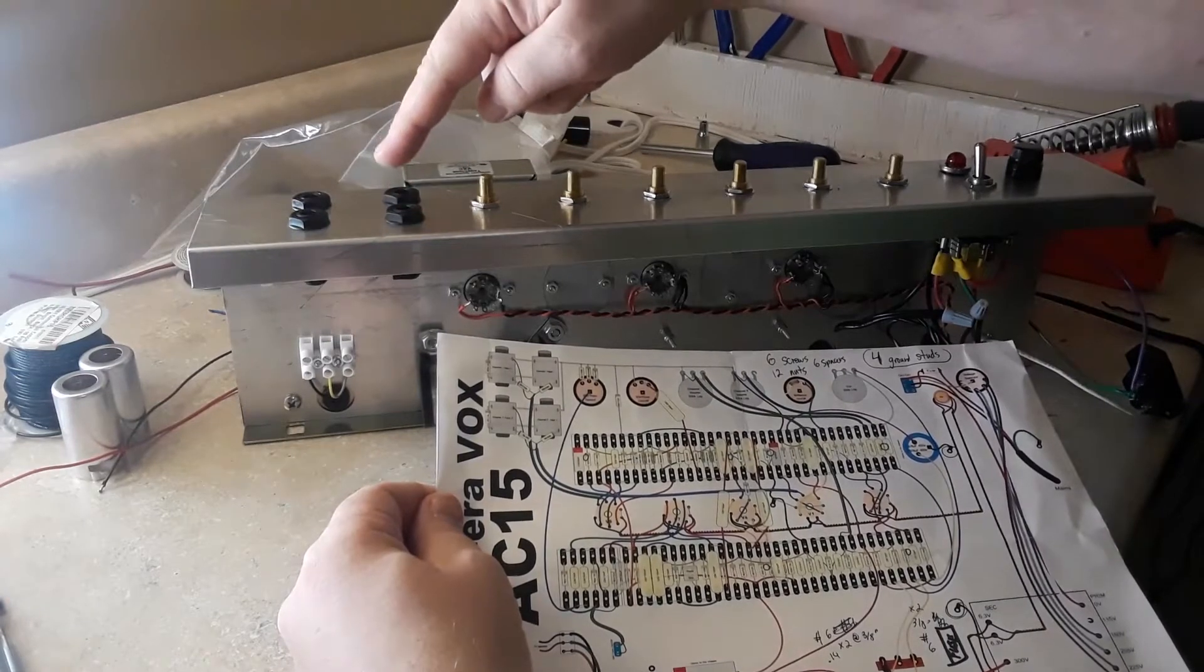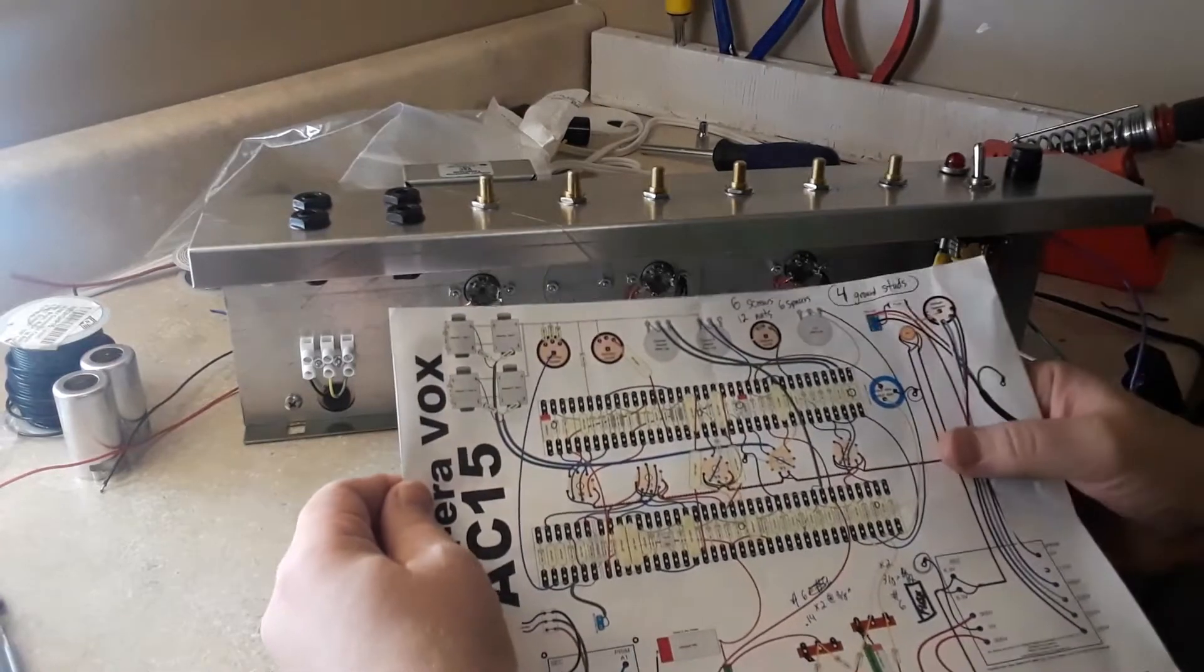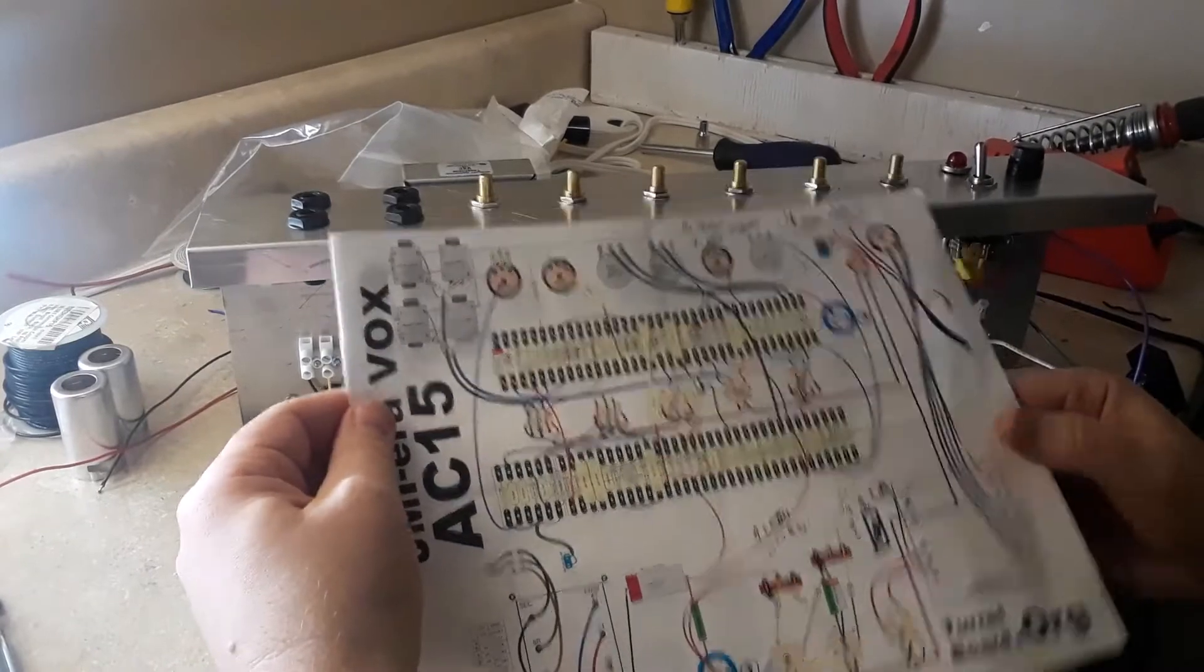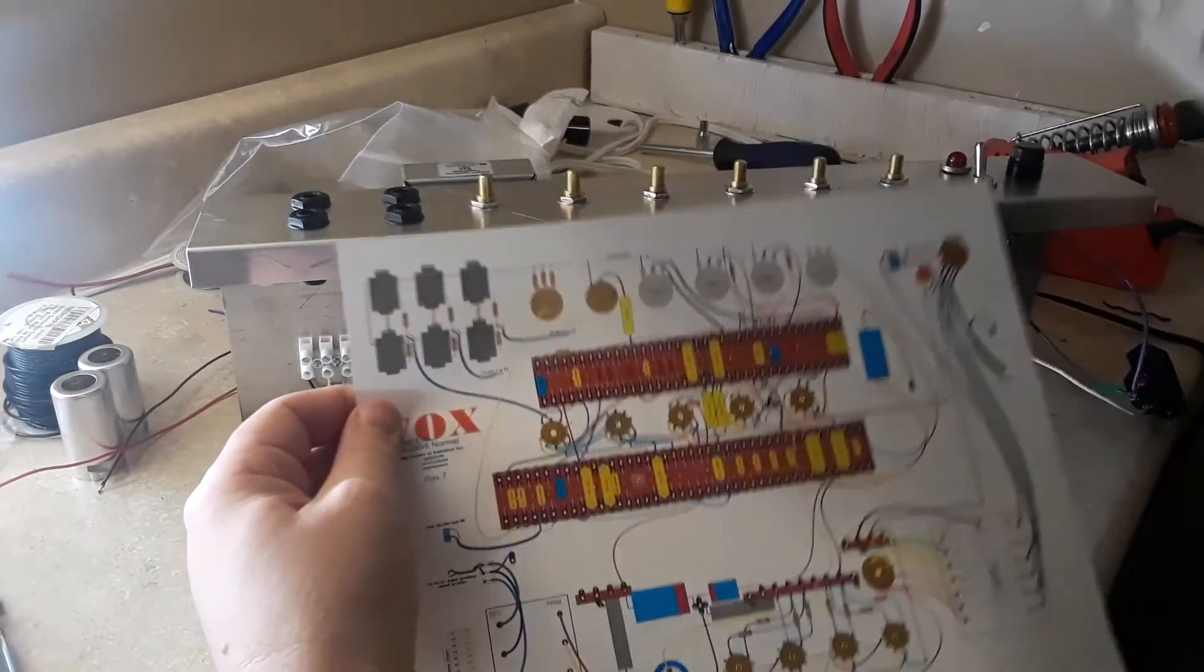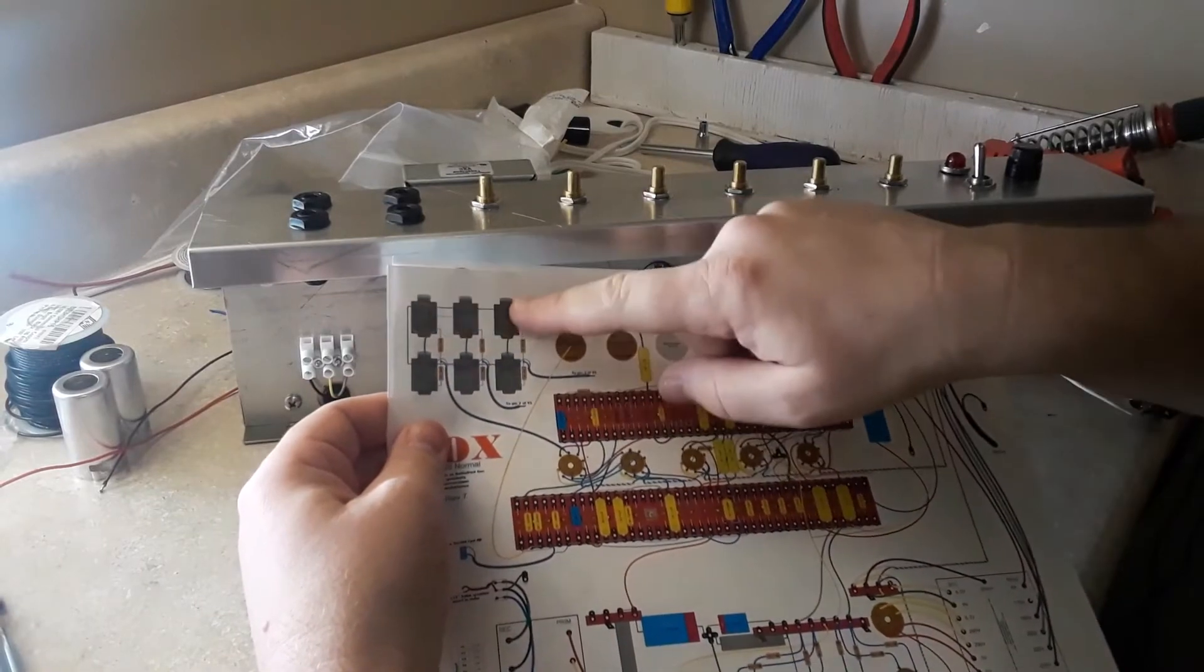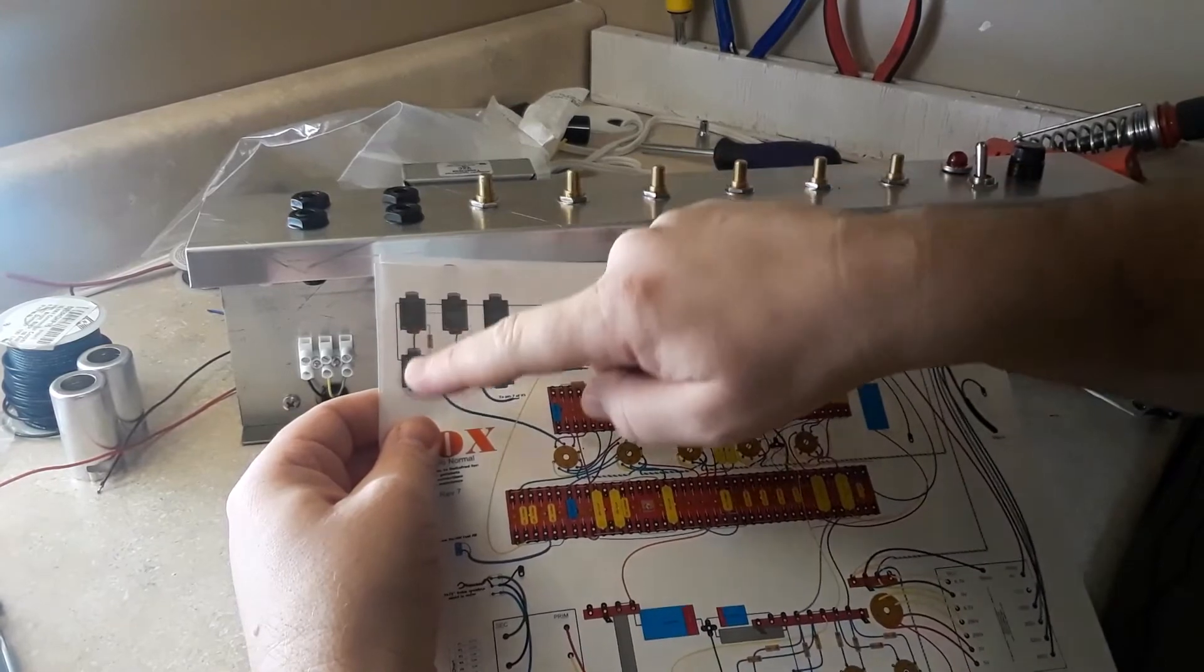And then we had the corresponding high and low inputs for each channel. And I'm not sure which one was high or low, it wasn't specified on the faceplate. But if you notice how the AC30 was wired, it had each of the channels grouped in this way so that we had high and low, high and low, and high and low.